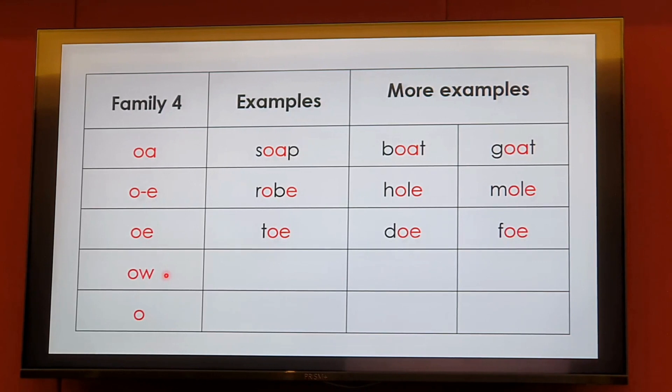Let's look at the next phonogram 'ow' - 'o' as in snow. Can you think of more examples? Blow, glow.